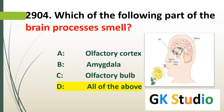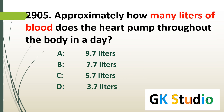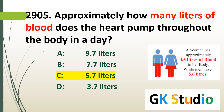Which part of the brain processes smell? All of the above — olfactory cortex, amygdala, and olfactory bulb. These three components process smell. Approximately how many liters of blood does the heart pump throughout the body in a day? 5.7 liters on average. A male has 5.6 liters and a woman has 4.5 liters of blood in the body.